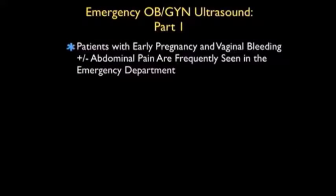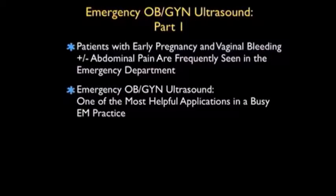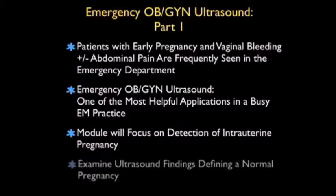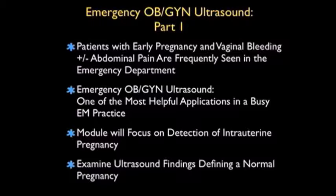In this module entitled Emergency OBGYN Ultrasound Part 1, we're going to focus entirely on the ultrasound findings of intrauterine pregnancy. Patients with early pregnancy and vaginal bleeding with or without abdominal pain are frequently seen in the emergency department. Emergency OBGYN ultrasound has evolved to be one of the most helpful applications of sonography in a busy emergency medicine practice, so this module will focus primarily on the detection of intrauterine pregnancy and the ultrasound findings that define a normal pregnancy for an emergency physician sonographer.